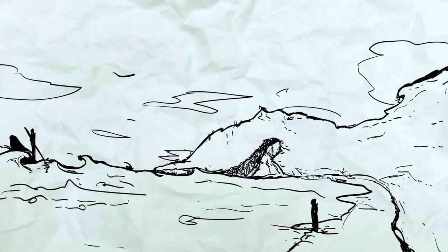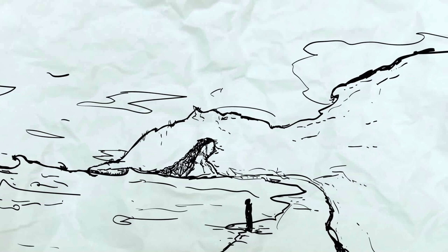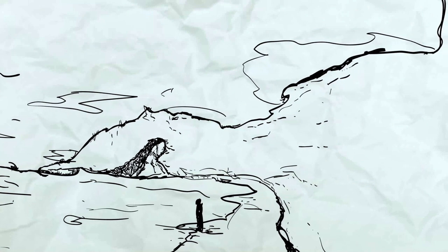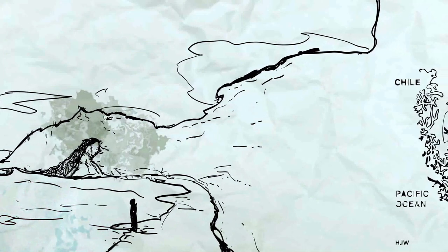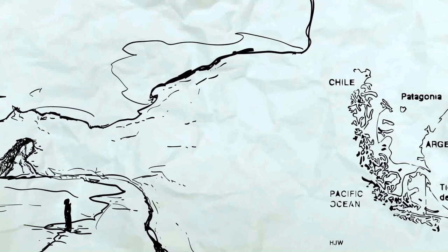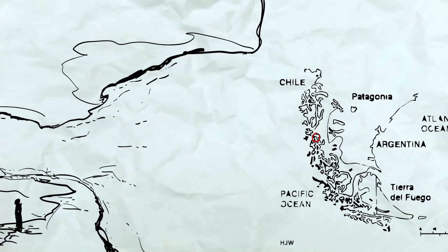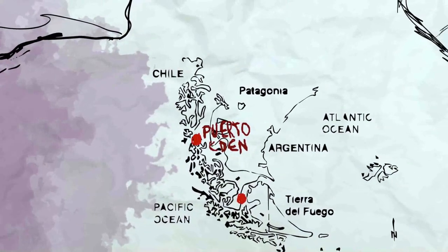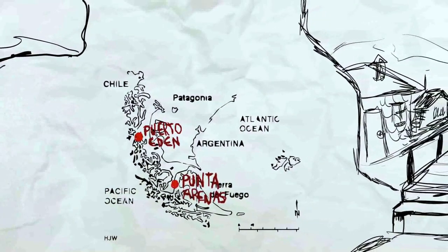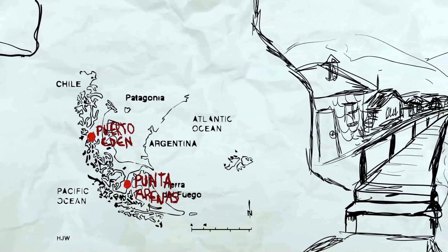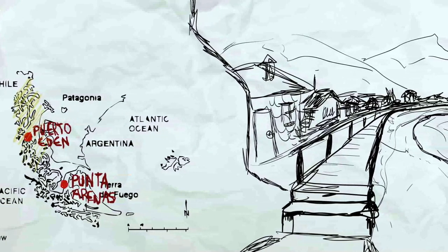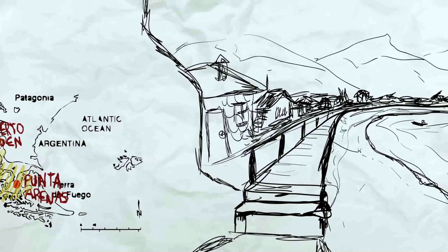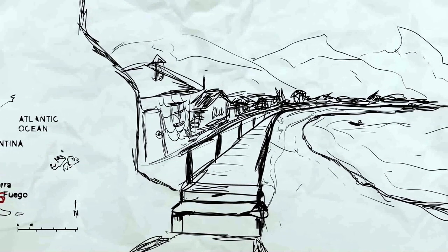El pueblo Kawésqar se caracteriza por ser un pueblo canoero, que es marítimo. No tiene dioses a los cuales adorar, pero sí tiene alguna ceremonia que dentro del concepto de la religiosidad se puede tomar como tal. El territorio del pueblo Kawésqar abarca desde el Golfo de Penas hasta la primera angostura del Estrecho de Magallanes. Es un pueblo que por miles de años recorrió un vasto territorio que tuvo relaciones comerciales con los chonos, con los yaganes, con los pueblos de la Pampa y la Patagonia, y conserva hoy día la cultura y el idioma.